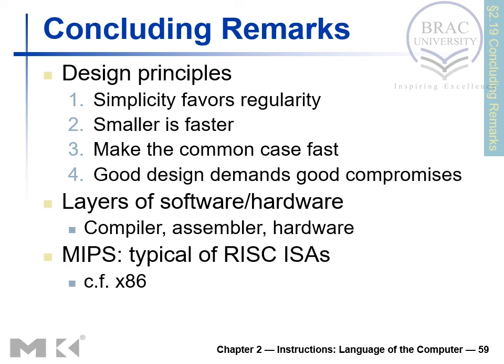In concluding remarks for this chapter, we have seen the key design principles: simplicity favors regularity, smaller is faster, make the common case fast, and good design demands good compromise. There are also layers of software and hardware — compiler, assembler, and hardware. MIPS is a RISC instruction set architecture, which distinguishes it from other architectures such as x86.